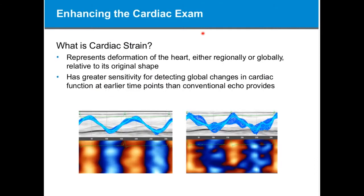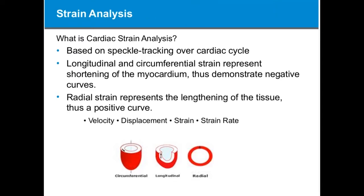Enhancing the cardiac exam is very important for us. Cardiac strain represents the deformation of the heart, either regionally or globally, relative to its original shape. Strain has greater sensitivity to detect global changes in cardiac function at earlier time points than conventional echo can provide. Strain analysis is based on speckle tracking over the cardiac cycle. Longitudinal and circumferential strain represent the shortening of the myocardium and demonstrate negative curves. Radial strain represents the lengthening of the tissue and is a positive curve. You can look at velocity, displacement, strain, and strain rate.